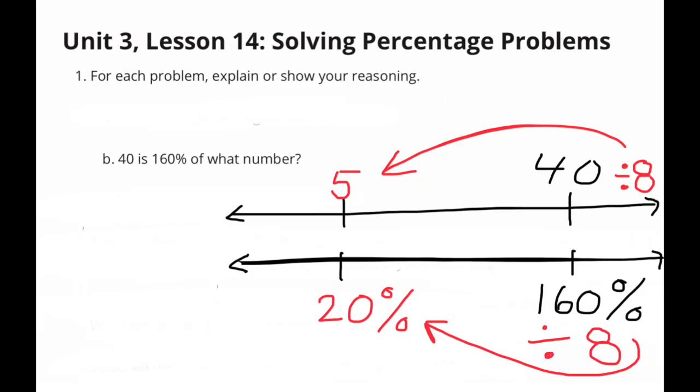Once I did that, I would know the value of the missing number. Since I divided 160% by 8, I must divide 40 by 8.